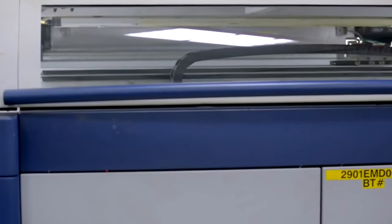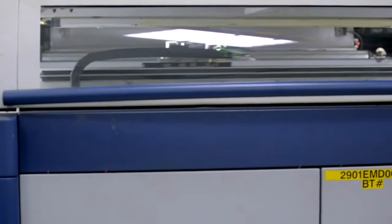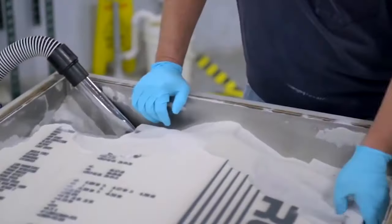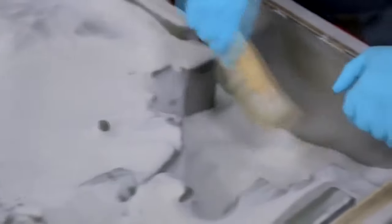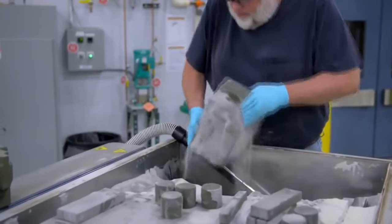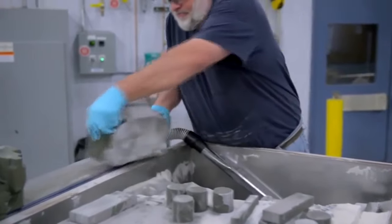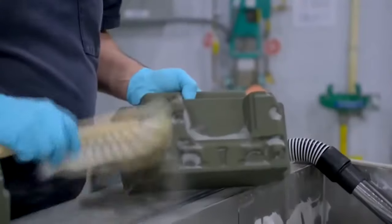Then the print head of the 3D printer passes over the sand and applies the binder according to the specified layer of the part. Sand that is not involved in the part, the sand on which the binder has not fallen, serves as a support. This means that the part can be of any complex shape. The process is repeated until the part is complete.